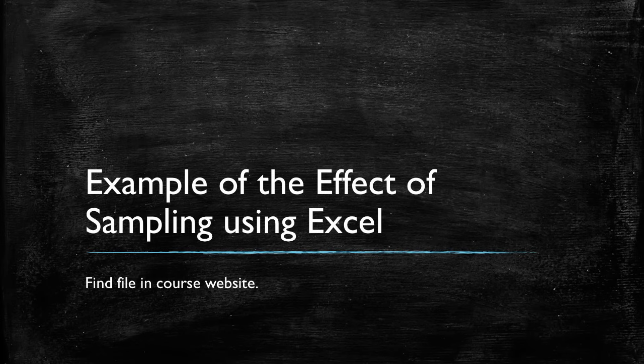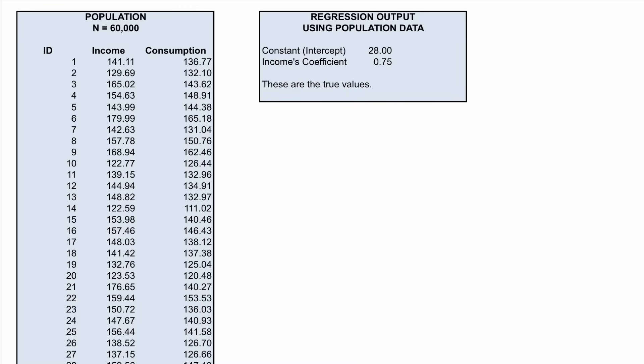In this example, we will be drawing random samples from a population of families to see how our estimates vary, and in particular how they compare to the actual value based on the entire population. We're now working in Excel in a file available on the course website. On the left side of the screen, you see a dataset for 60,000 families with two data points: income and consumption. This is a hypothetical case where we observe the entire population — we usually never see this because it is very expensive and time-consuming to collect. This is why censuses are run every five to ten years. Usually we take samples and use insights from those samples to make inferences about the entire population.